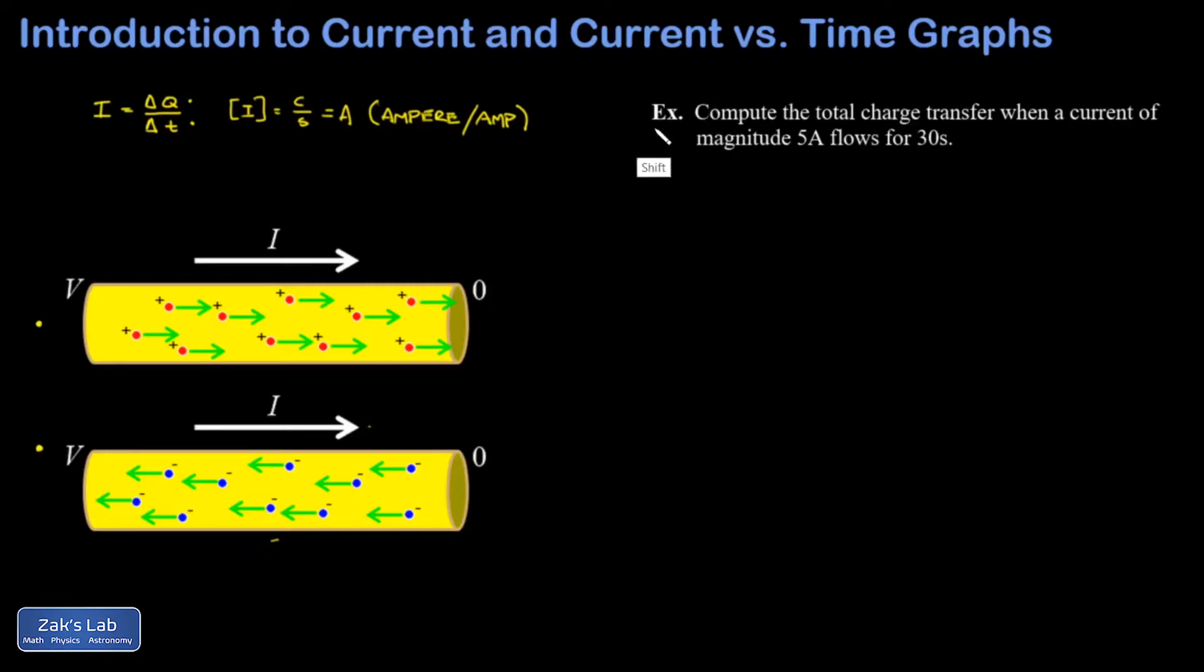For now, we're going to look at a simple example. We're asked to compute the total charge transfer when a current of magnitude 5 amps flows for 30 seconds. If I look at the definition of current, all we have to do here is solve for delta Q, and I get I times delta T. I is 5 amps, and delta T is 30 seconds, and I get 150 coulombs of charge flowing.